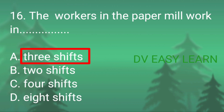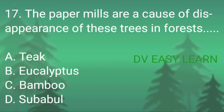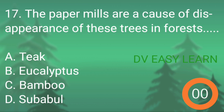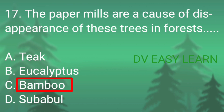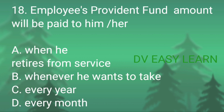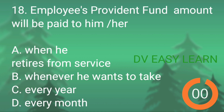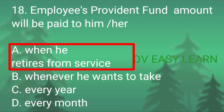Correct answer: three shifts. Question number 17: the paper mills are a cause of disappearance of which trees in forests — correct answer: bamboo. Question number 18: employees provident fund amount will be paid to him or her — correct answer: when he retires from service.